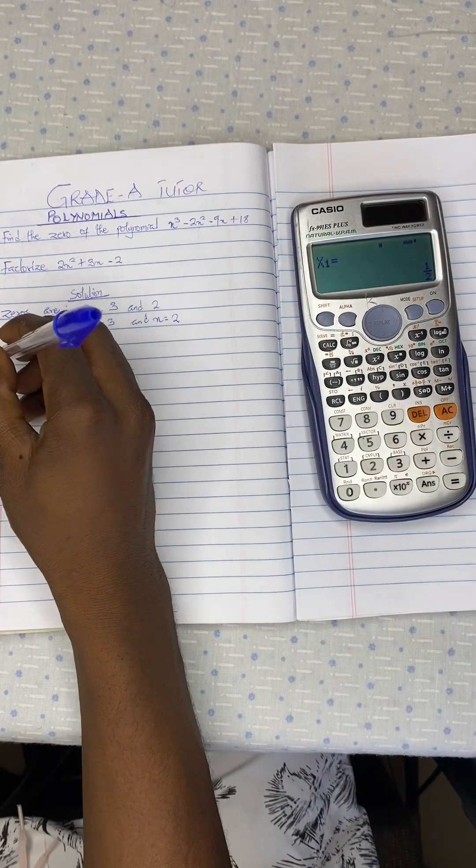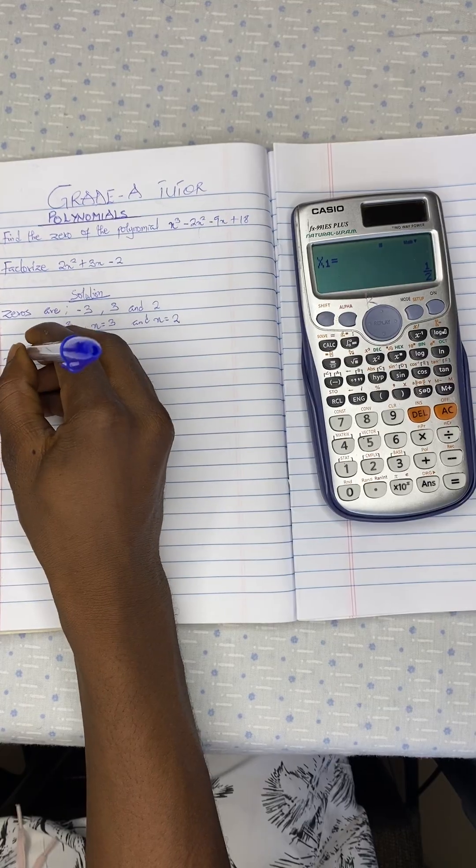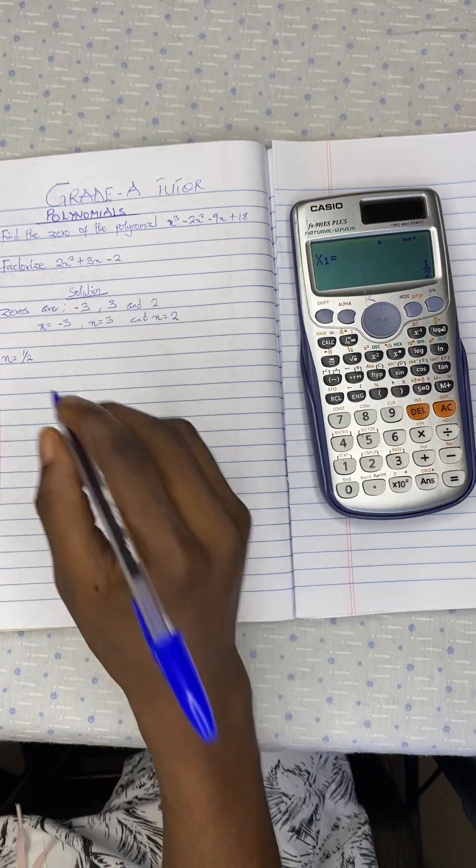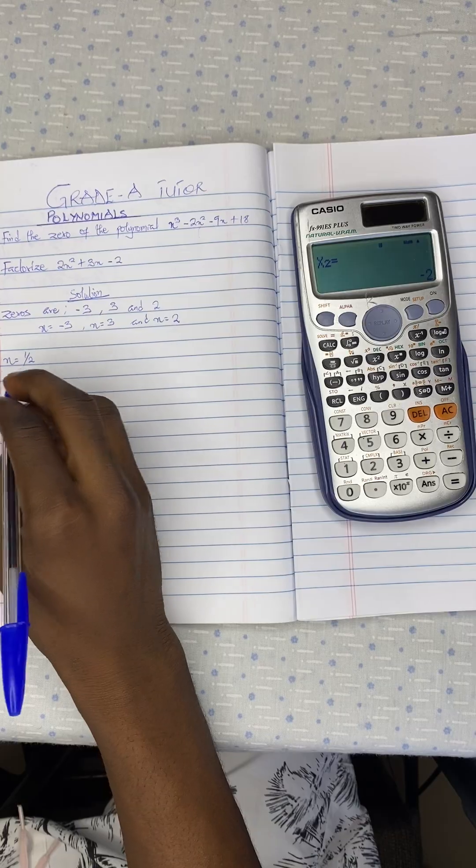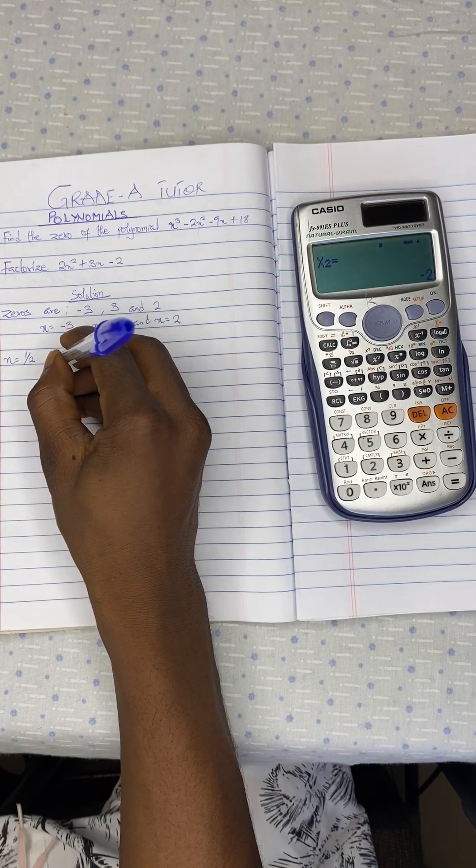And now you have x equal to 1 over 2, and x equal to negative 2.